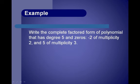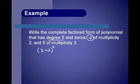Next example: write the complete factored form of a degree-5 polynomial with zeros negative 2 of multiplicity 2 and 5 of multiplicity 3. The sum of all powers must be 5. Negative 2 is a zero, so the factor is x plus 2 of multiplicity 2. If the zero is 5, the factor is x minus 5 of multiplicity 3. So this would be our factored form. In this case, since no leading coefficient was mentioned, we assume it's 1.